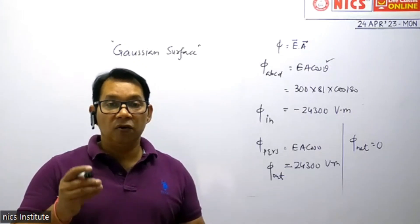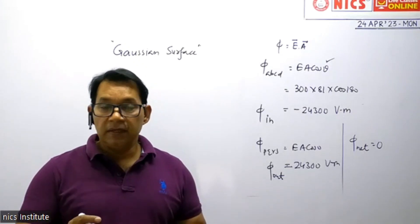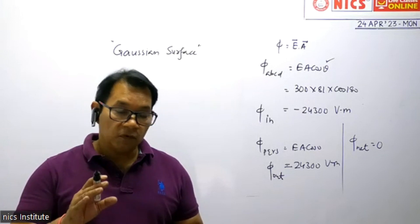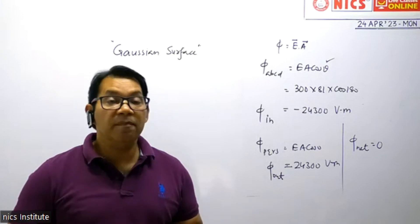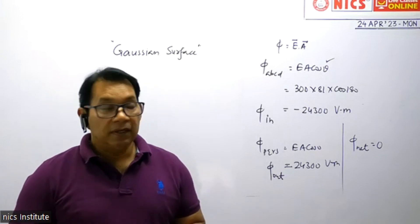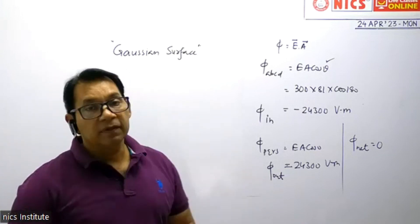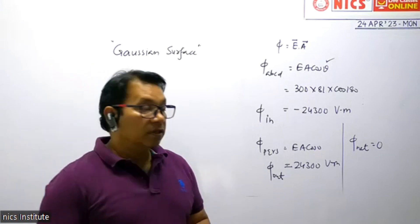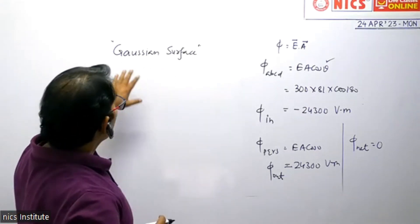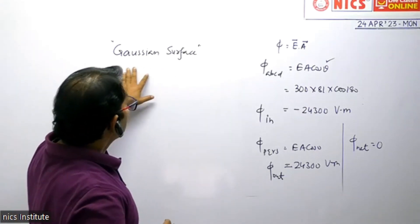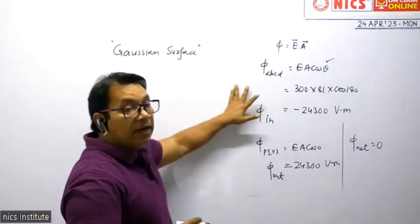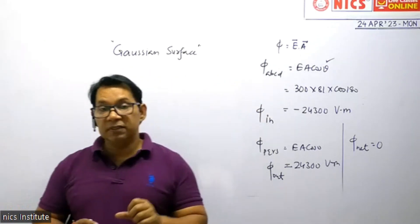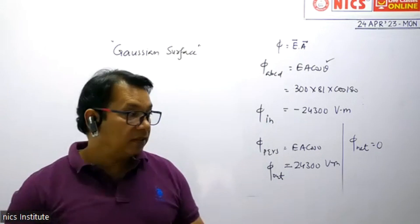The three-dimensional enclosed surface is called a Gaussian surface. Gauss was basically a mathematician who gave this law — Gauss's law. A three-dimensional imaginary enclosed surface is called a Gaussian surface.